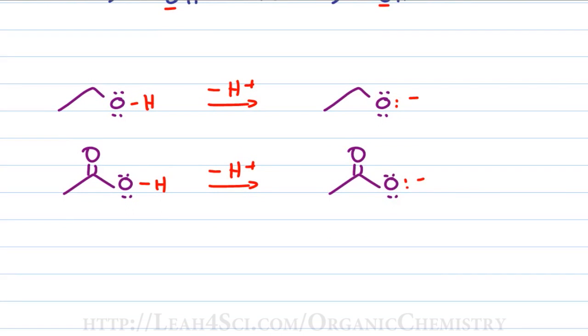On the other hand, if we look at the acetate which is the conjugate base of acetic acid, we have the negative oxygen sitting next to a carbonyl group which means we can have resonance.